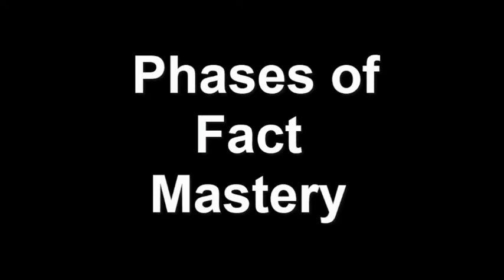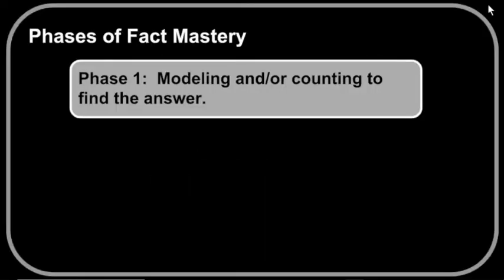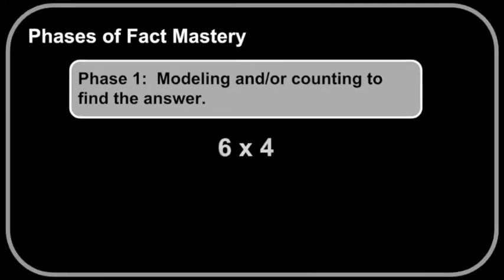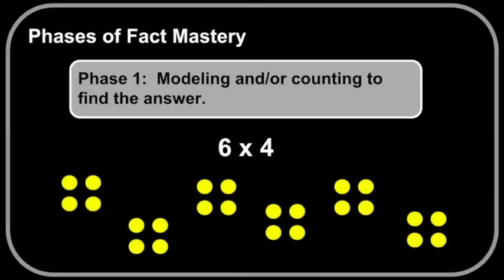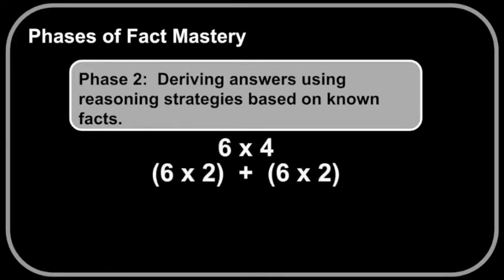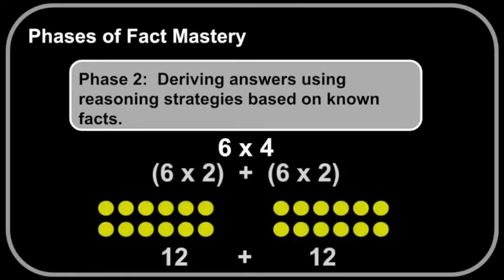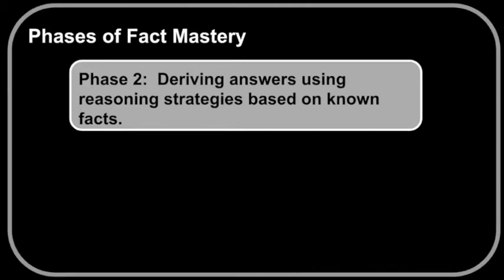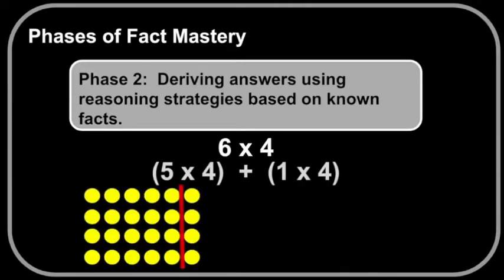Let's take a look at the phases of fact mastery. Phase 1 focuses on modeling and counting to find the answer. For example, 6 times 4 can be represented with 6 equal groups of 4. Phase 2 encourages students to derive answers by using reasoning strategies based on known facts. For example, when solving 6 times 4, a student can simply double their 2's fact: 6 times 2 is 12, and 12 plus 12 is 24. Students can also decompose 6 times 4 into known facts such as 5 times 4 and 1 times 4. 20 plus 4 equals 24.